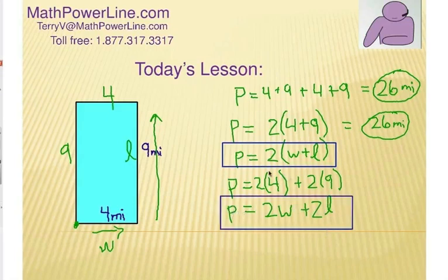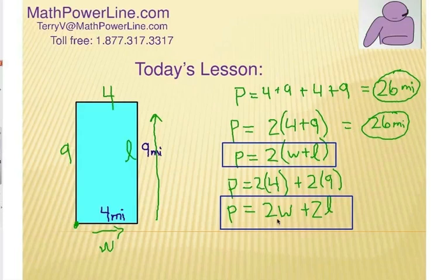The bottom line is that if it's a rectangle, you can find the perimeter in two shortcut ways. You could take the width plus the length and double it — that's like walking halfway around and then doubling the distance. Or you could double the width and double the length and add them together, which is exactly what happens walking around the rectangle. Thanks for watching this video and I hope it helps you understand perimeter. We'll see you later.